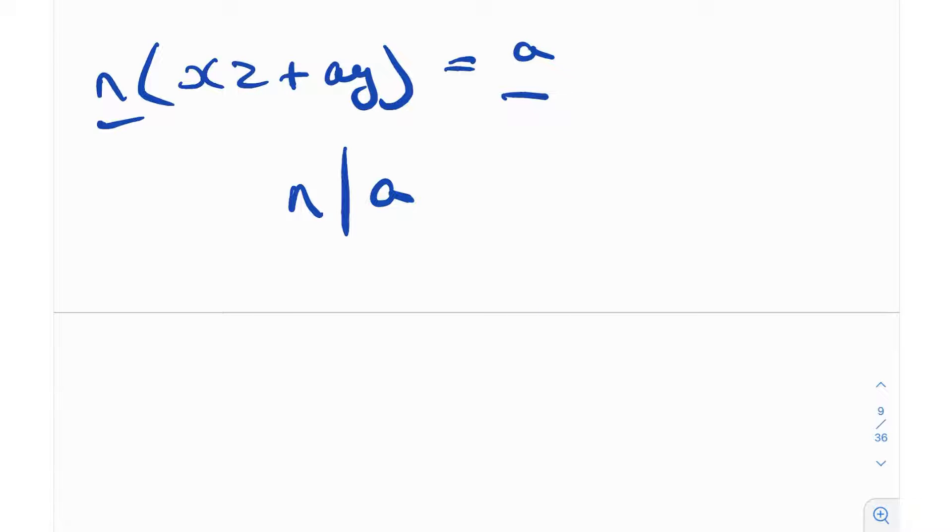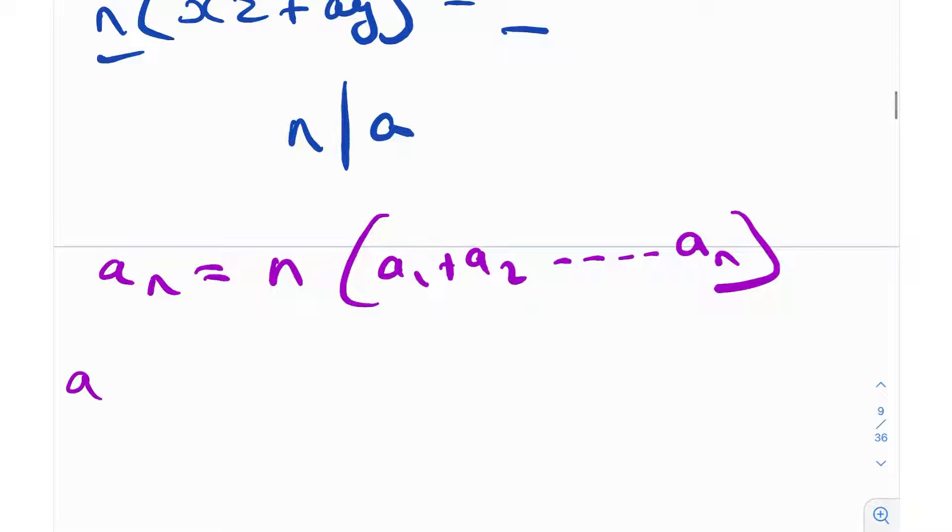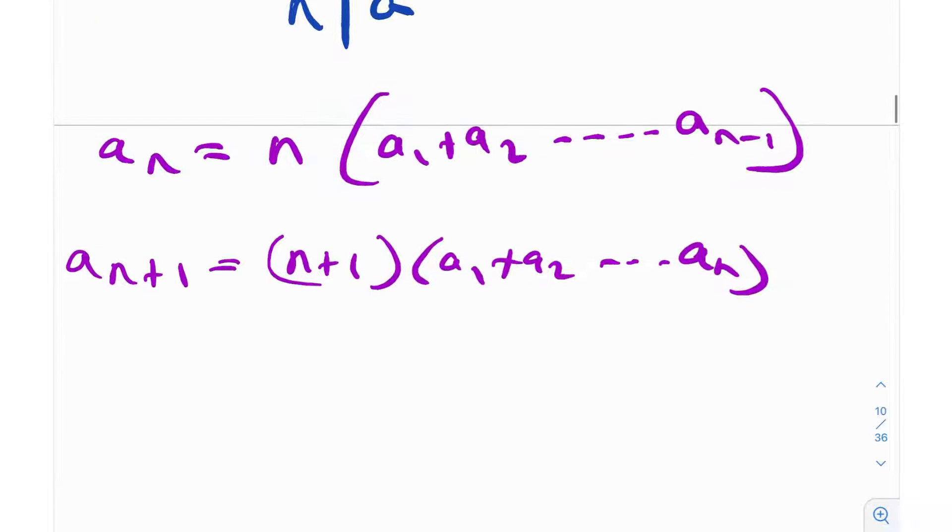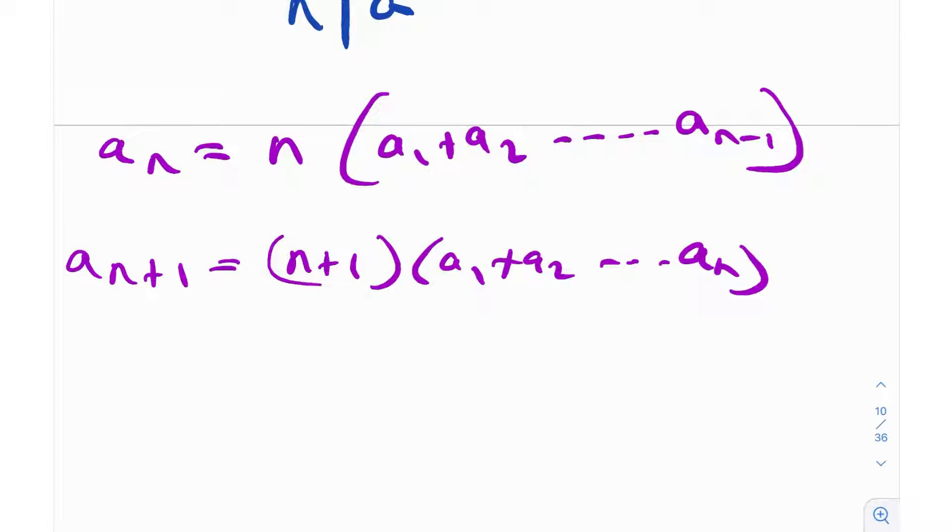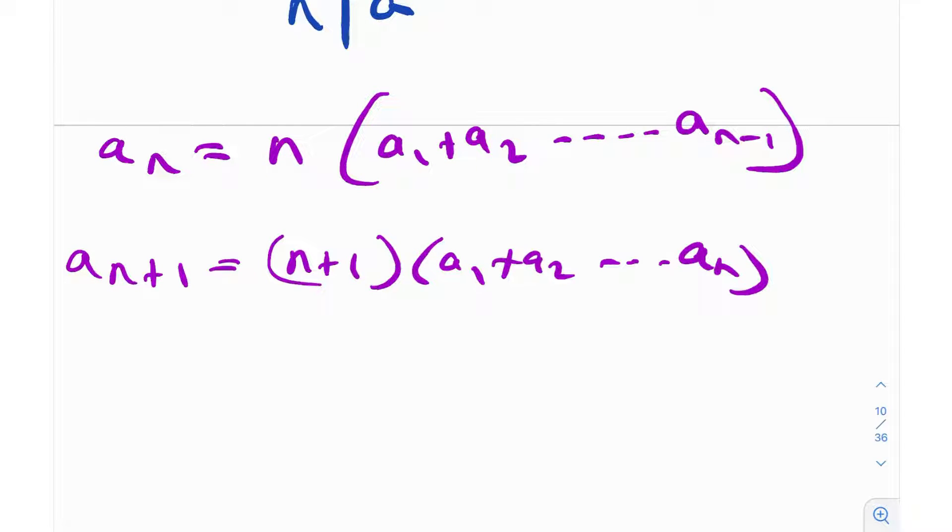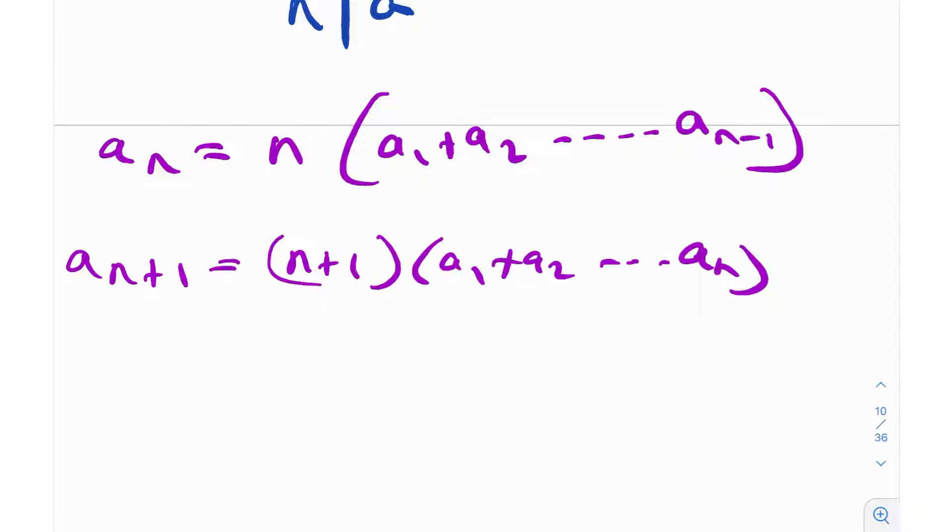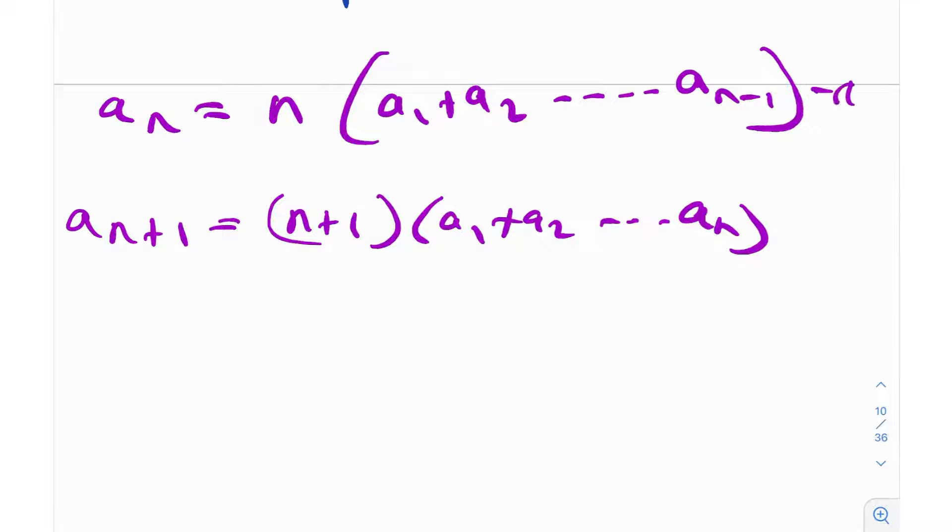We're given the recursion that aₙ = n(a₁ + a₂ + ... + aₙ₋₁). How can I write aₙ₊₁? Just replace every n with n+1: aₙ₊₁ = (n+1)(a₁ + a₂ + ... + aₙ). Let me label this as equation 1 and equation 2. Equation 1 is quite similar to equation 2; there are a lot of common terms in this bracket.